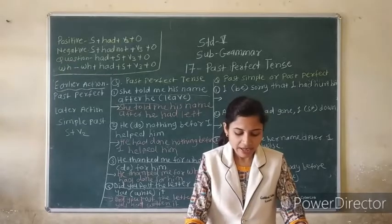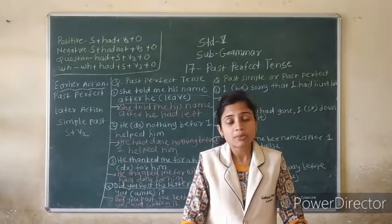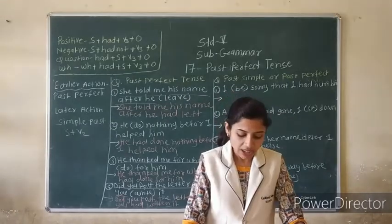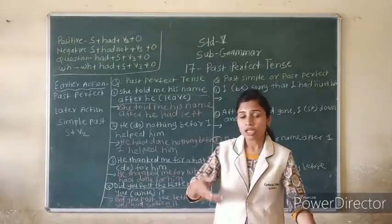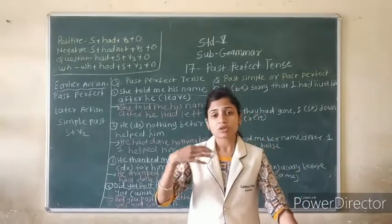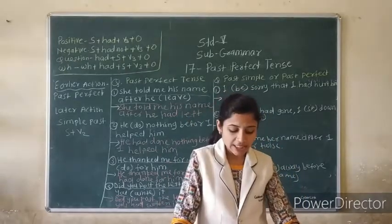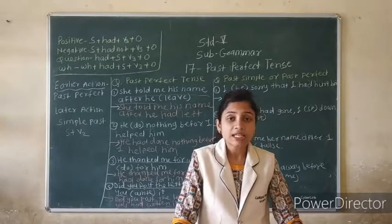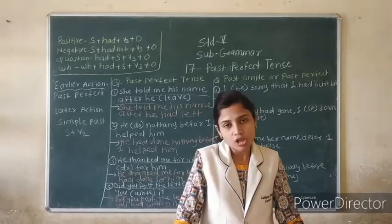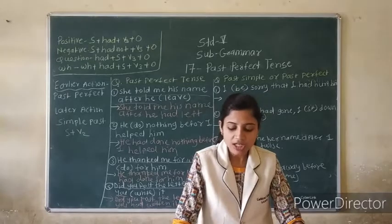Eight: 'He died after he was ill for a long time.' The bracket has 'be'. Verb 3 of 'be' is 'been'. So: After he had been ill for a long time. He had been ill for a long time.